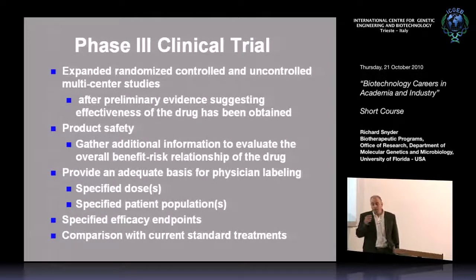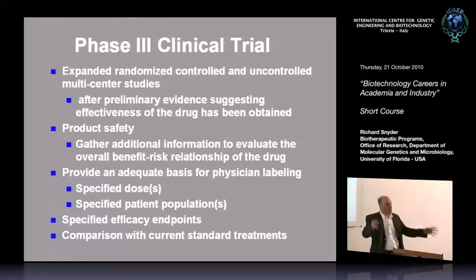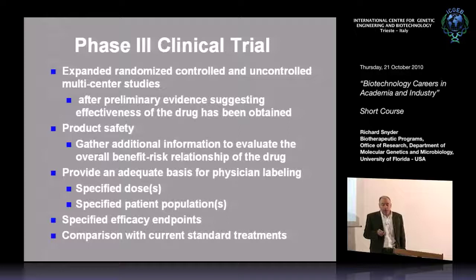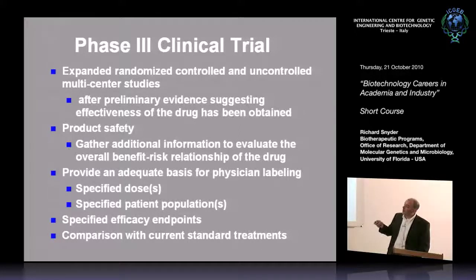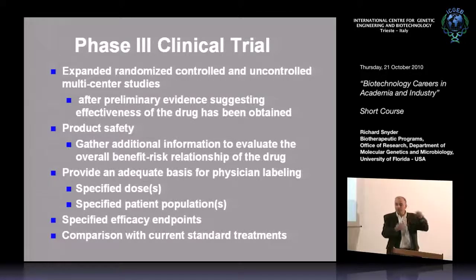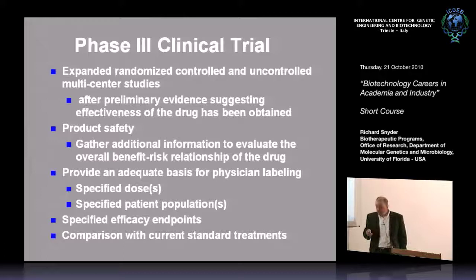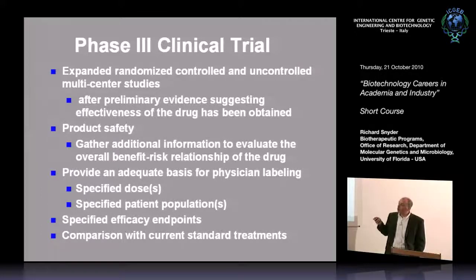In Phase Three it becomes expanded — a randomized, controlled, multi-center trial where you're recruiting more and more patients. You're gathering additional information to evaluate the risk-benefit relationship of the drug. This also provides the basis for labeling. In America, when you get a drug it comes with a sheet — the label — and the regulatory agency takes labeling extremely seriously. It describes the side effects, how to use the drug, and things like that. These studies drive what goes into that label.